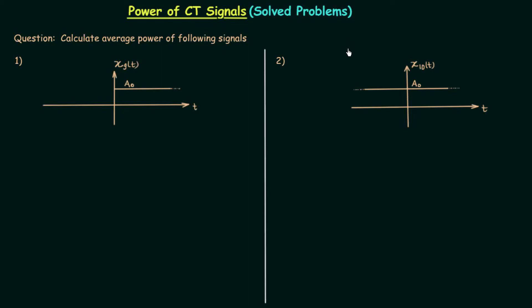In the previous lecture we calculated the average power of periodic signals and saw what happens to average power when performing various operations on amplitude and time. Now in this lecture, which is Part 2 of solved problems based on average power calculation of continuous time signals, we will solve two questions. The first question involves a step signal, the second involves a DC value, and the average power obtained in both cases will be finite. So both signals are power signals. Now let's begin the calculation.